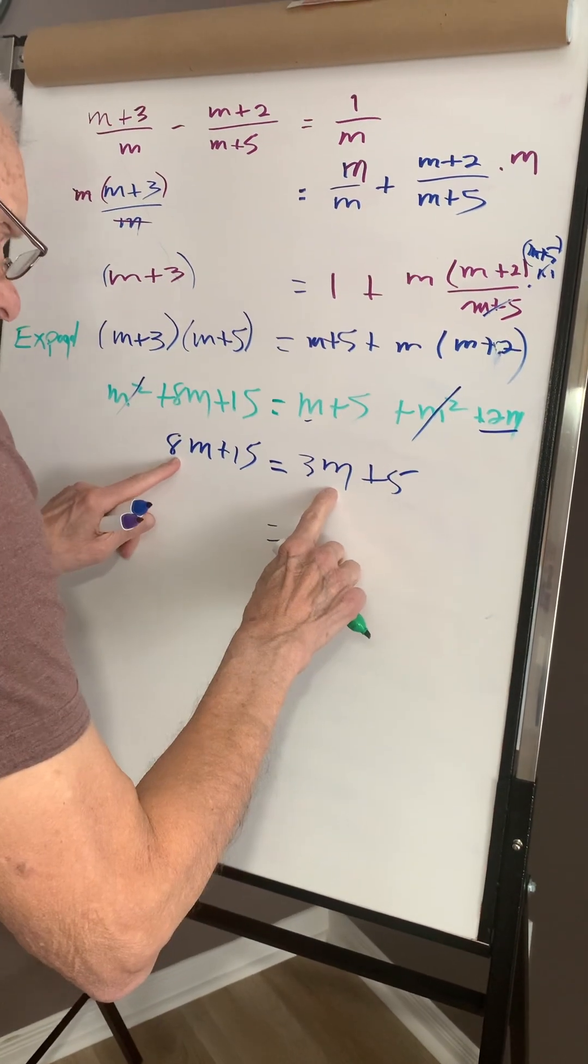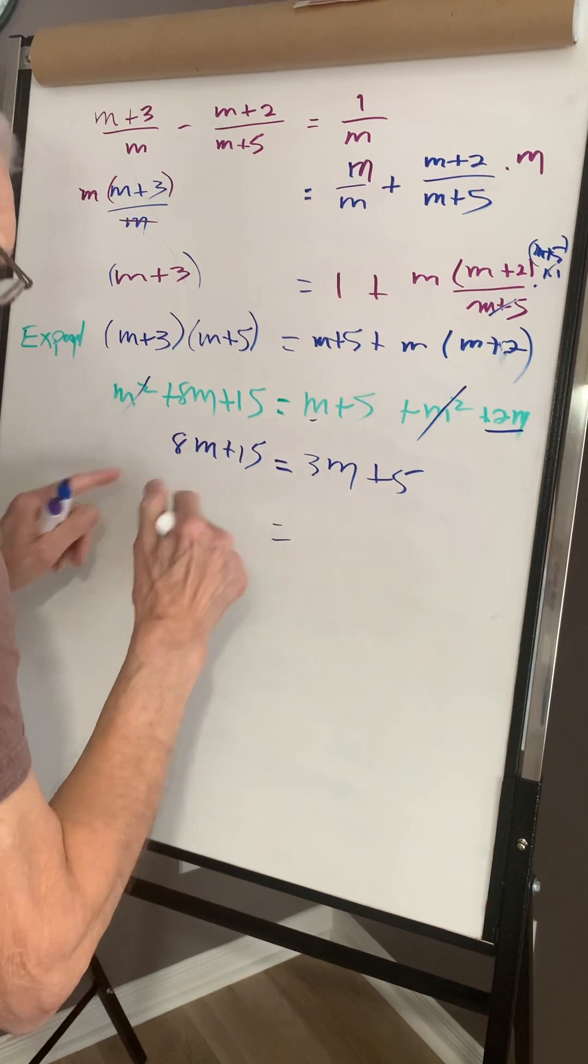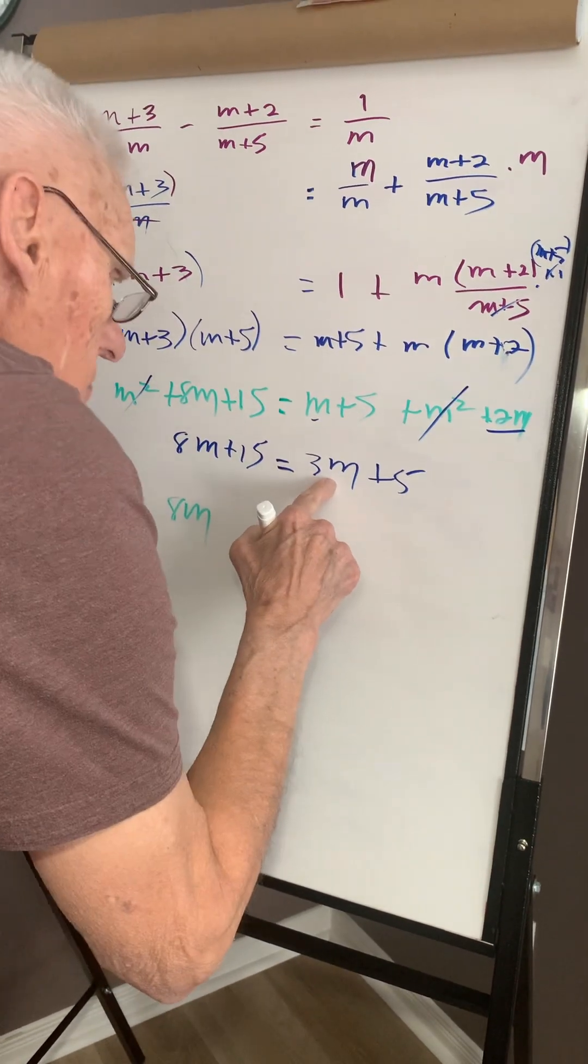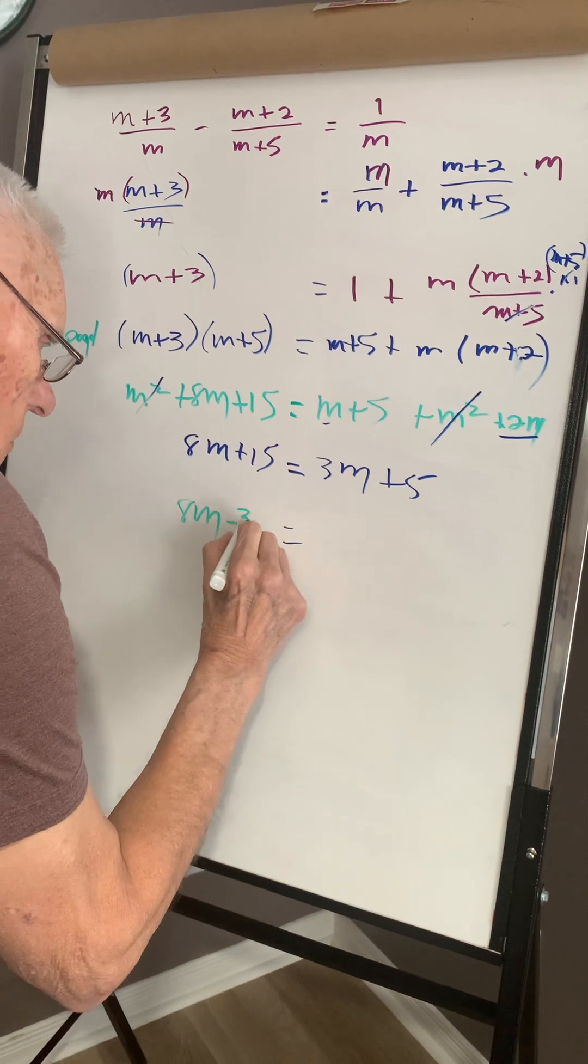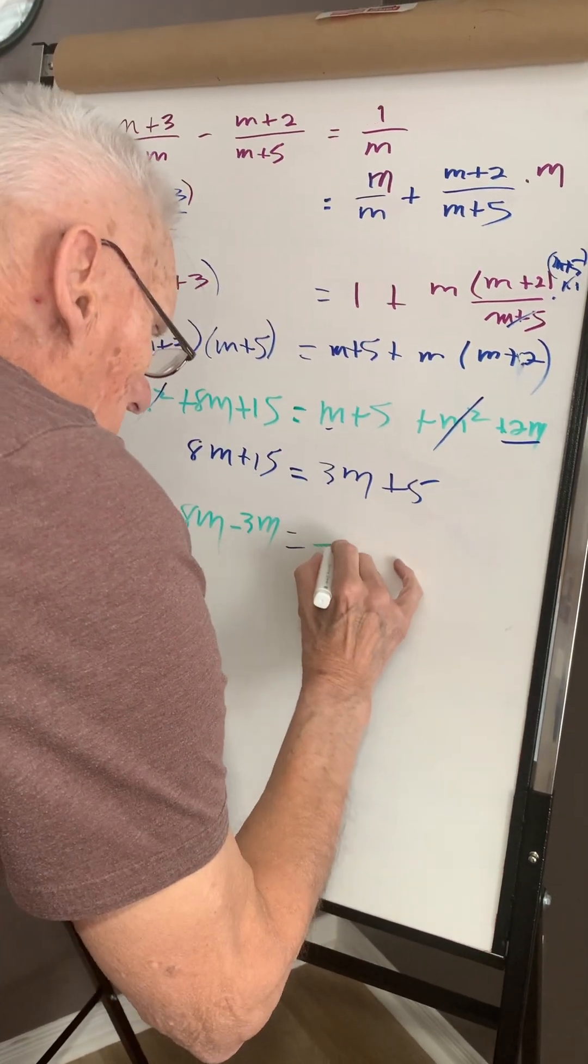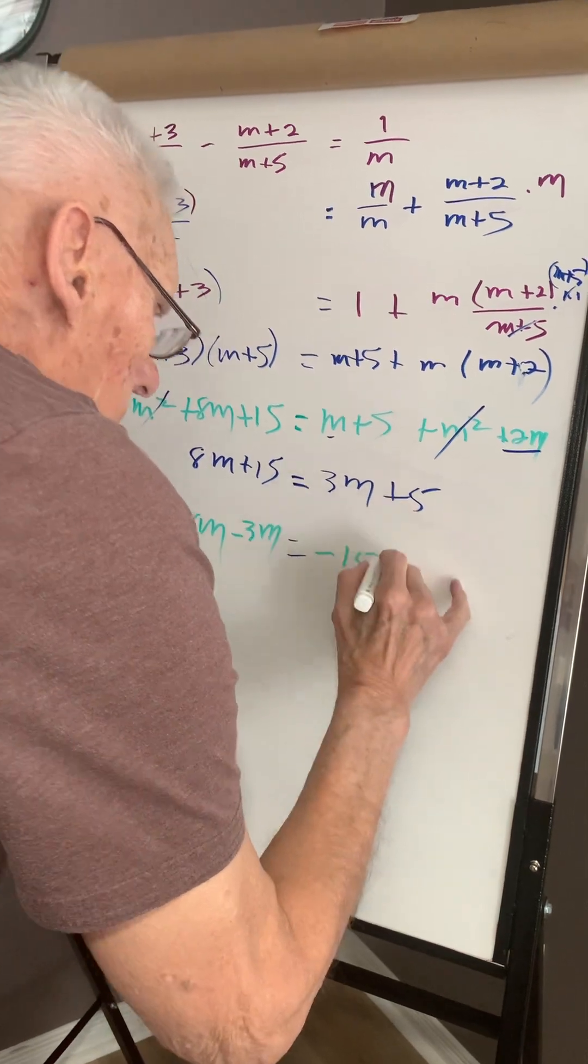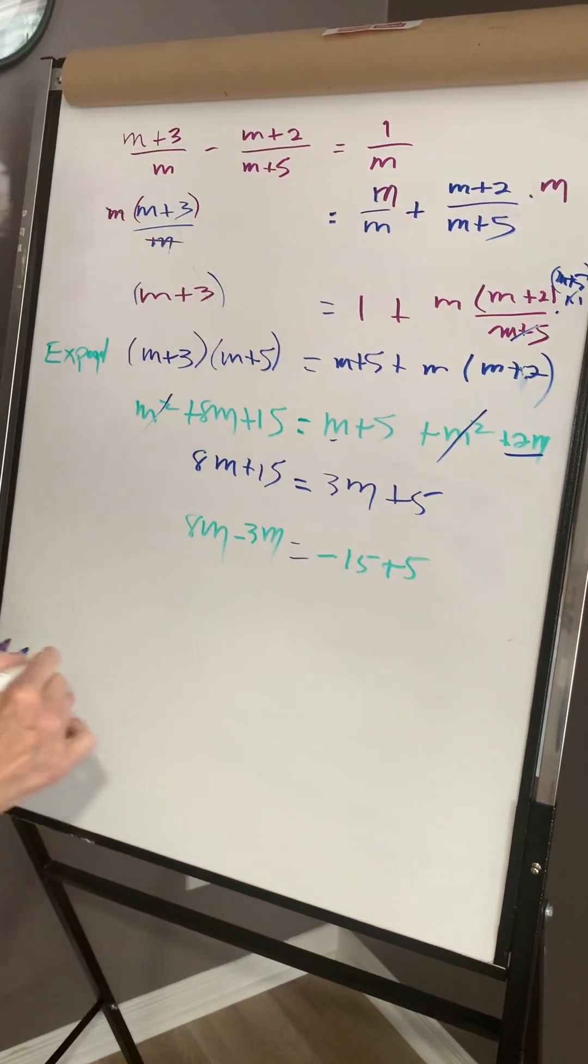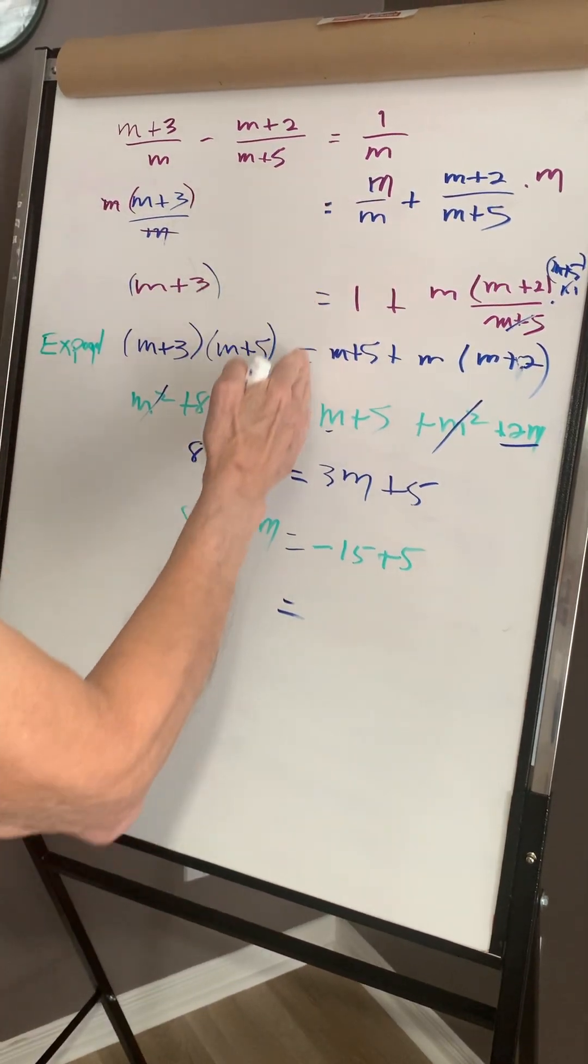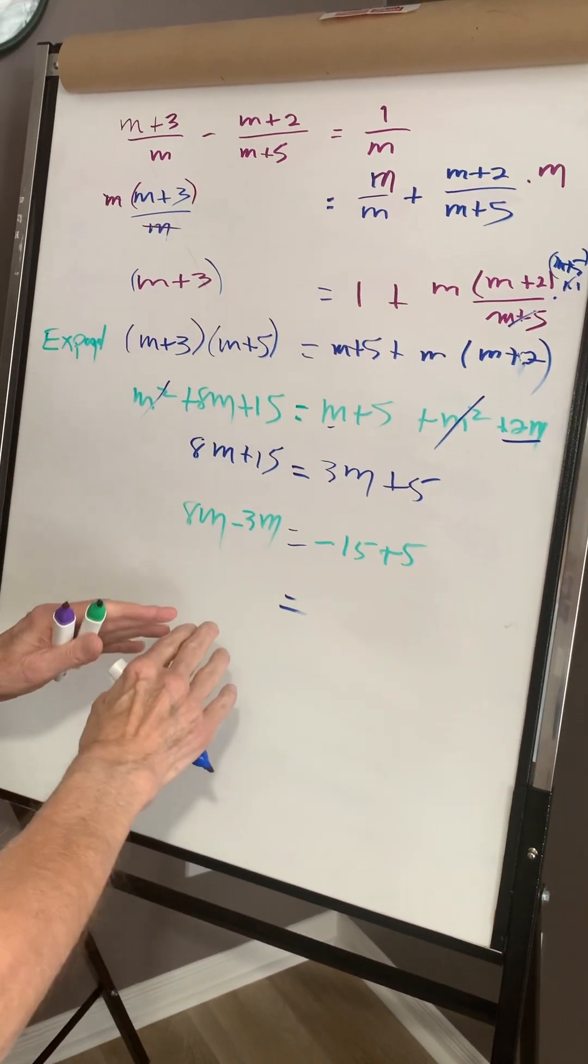Now I want the m's on one side, so leave the eight m where it is, transpose the three, becomes three m, transpose the fifteen over here, minus fifteen, plus five. Now, notice my equal signs are all lined up. It allows for less confusion.